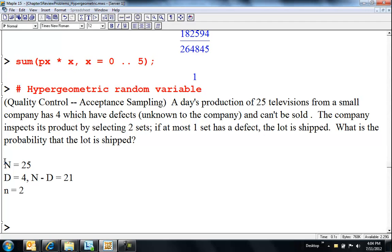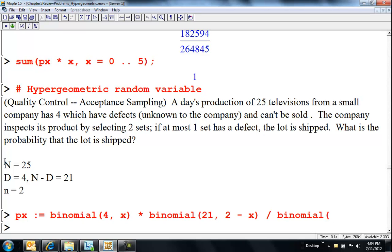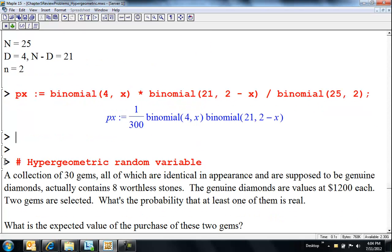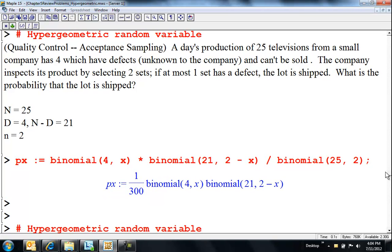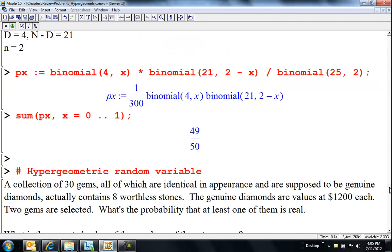Now we have a question about it. So I'd always, again, like I write this out and then I always build the mass function first. Let me see. So binomial 4 choose X times binomial 21 choose 2 minus X divided by binomial 25 choose 2. And what's the question here? Let's see. The company inspects its products by selecting two sets. If at most one set has defect, the lot is shipped. So at most one defect. What's the probability? That's the probability. At most one. The lot is shipped.